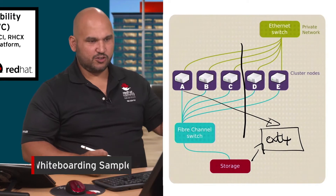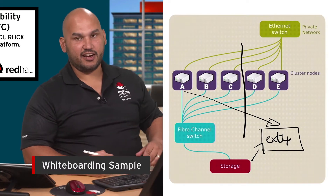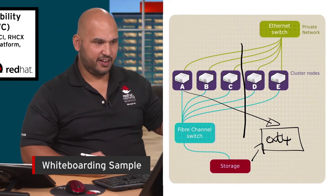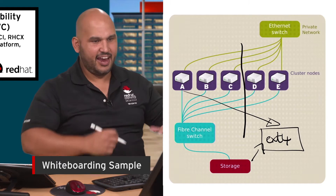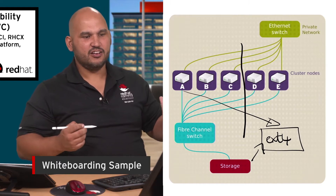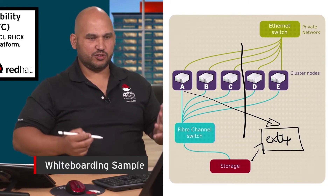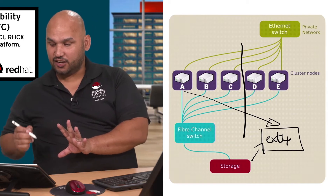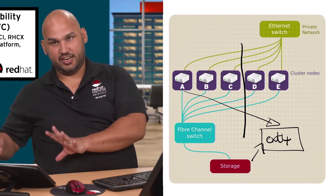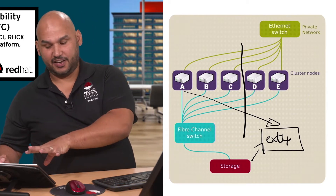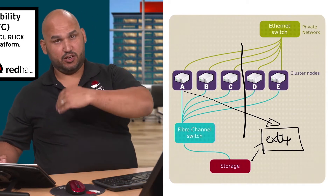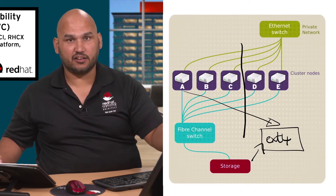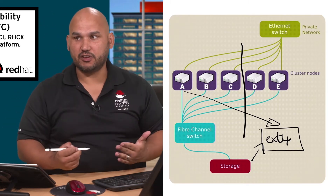Without quorum, those two nodes will decide that nodes A, B, and C have all failed and they instead need to be fenced. Why? So that those resources can be recovered. The resource in question is that nodes D and E are trying to recover that ext4-based file system, because according to nodes D and E, node A has failed and is unresponsive.